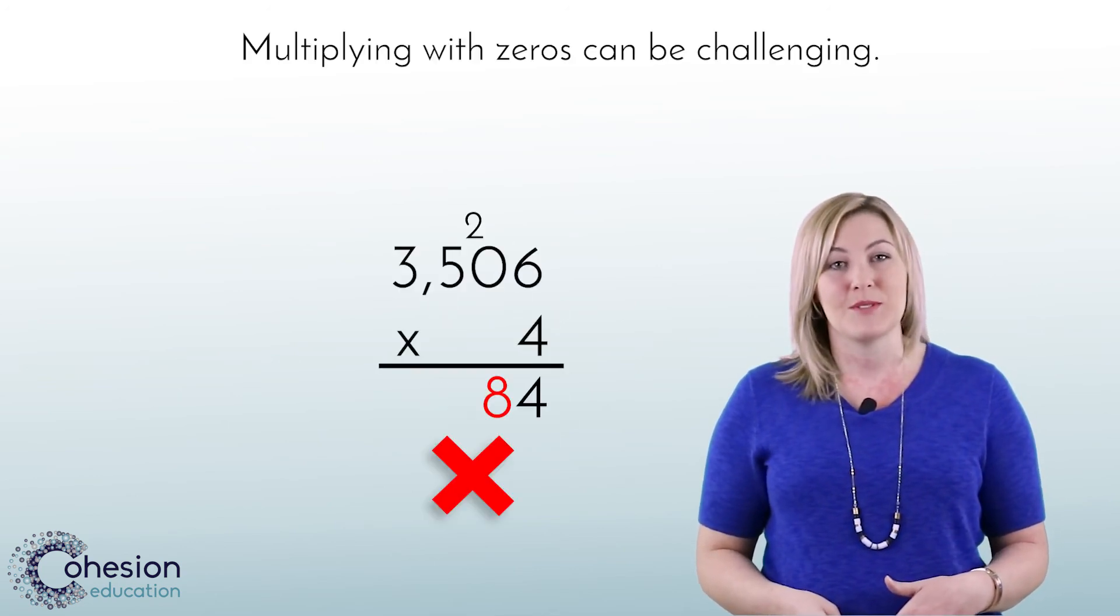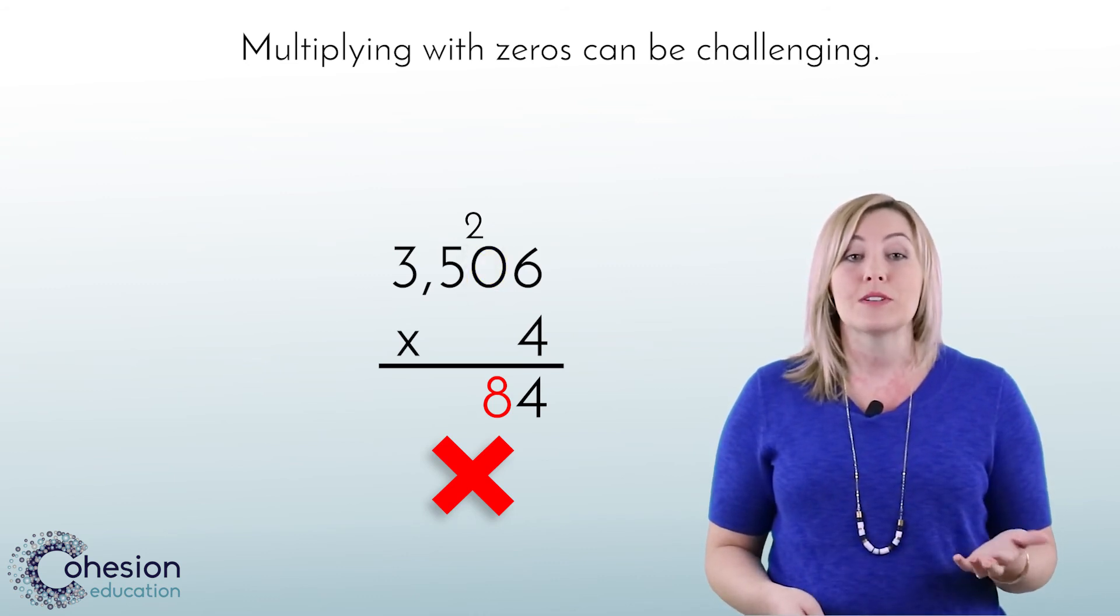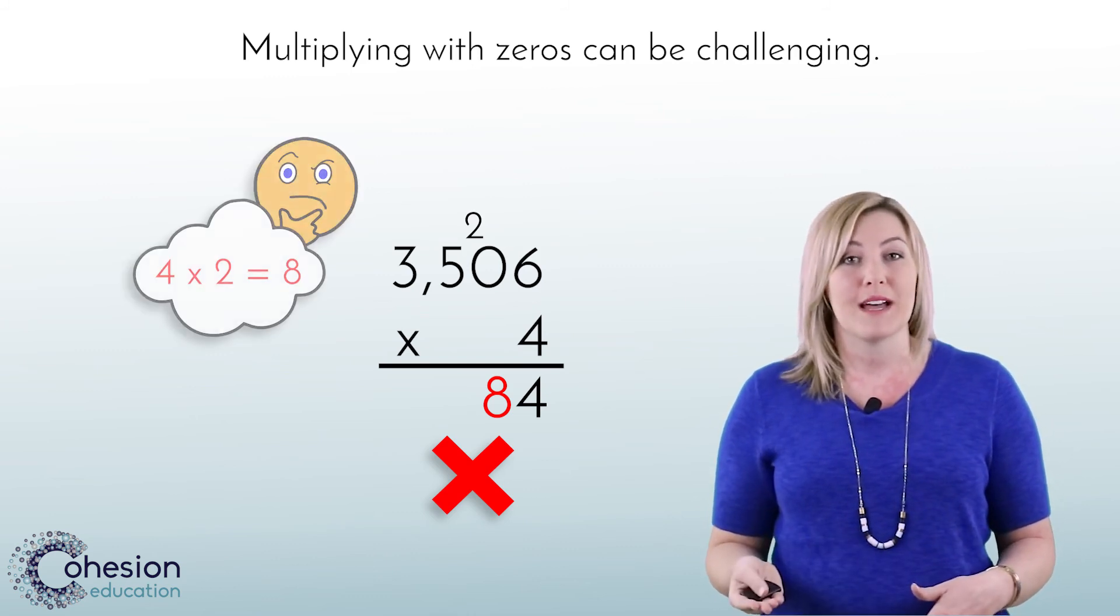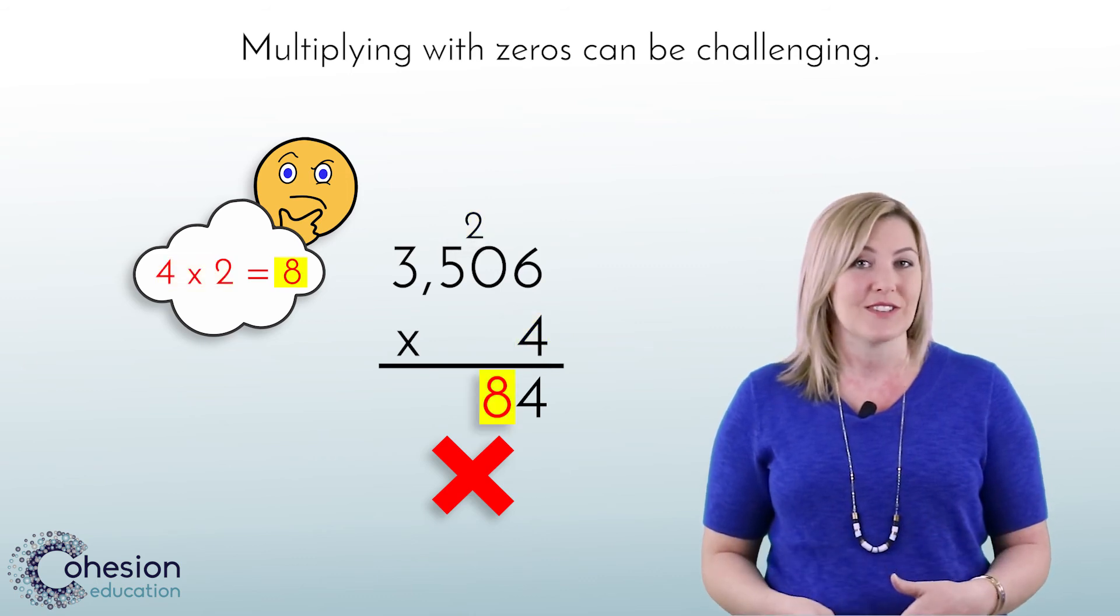Another time that students seem to encounter errors is when multiplying with zeros. For example, students may encounter a problem like this, and when multiplying the tens place, they may multiply the 4 by the regrouped 10, which is 2, getting an answer of 8.